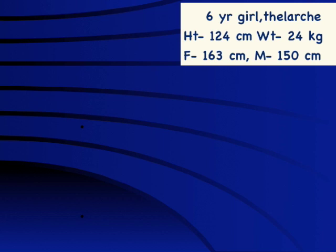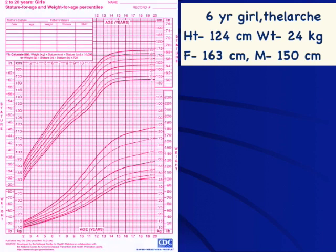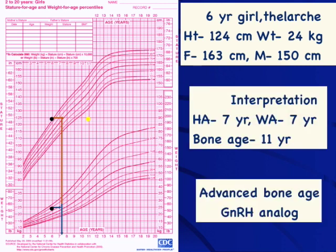Coming on to early development, particularly precocious puberty — this was a 6-year-old girl who had thelarche and was very tall for age. Parents were happy; a gynecologist said nothing to worry about. But when she came for evaluation, the first thing we looked at was bone age, which was alarmingly at 11 years. So this girl at 6 years of age has height and weight around 7 years, but her bones are already 11 years — she has lost 4 years of growth. This is not a simple case of slowly progressive puberty; it is a progressive form of precocious puberty. If we do not treat, this girl will end up really short. Bone age is therefore extremely important in this context.